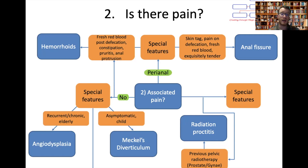If there is pain and it's perianal — with anal fissures there might be a skin tag, very fresh red blood, pain on defecation, and very exquisitely tender, with the patient able to pinpoint it precisely. With haemorrhoids, depending on their position, they can be painful or not — internal haemorrhoids tend not to be painful, but those that are external or thrombosed can be quite painful.